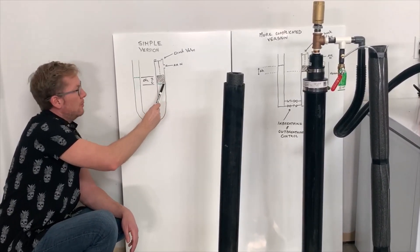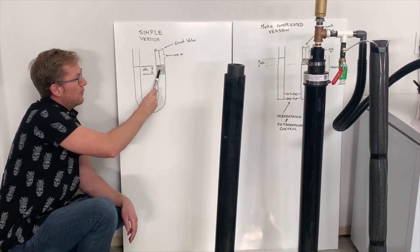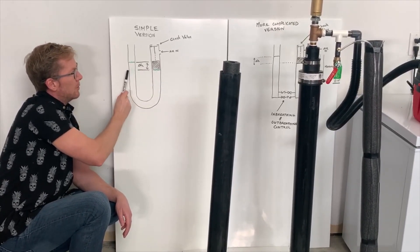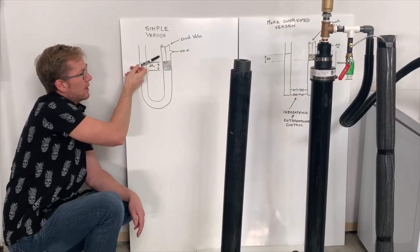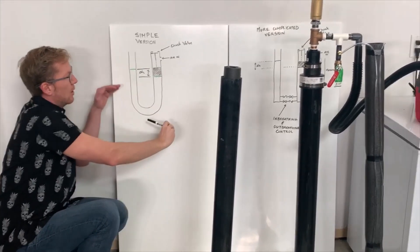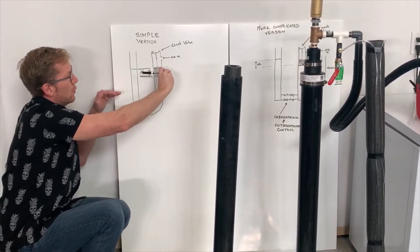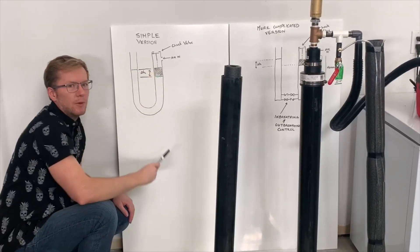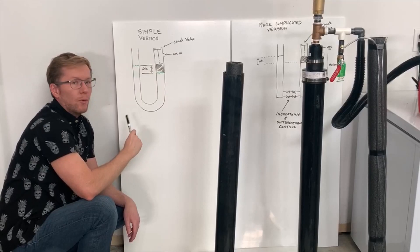When air comes into the U-tube, it pushes the water level down. The float moves down with the water level until the chain is pulled tight, which opens the check valve, relieving the pressure and causing the levels to return to normal. This pushes the push rod, closes the check valve, and starts the cycle all over again.